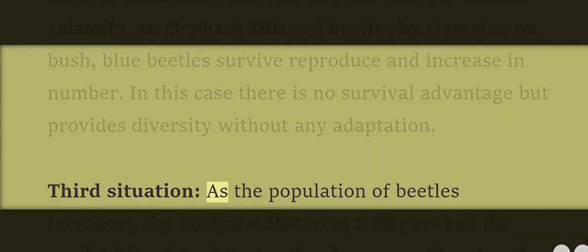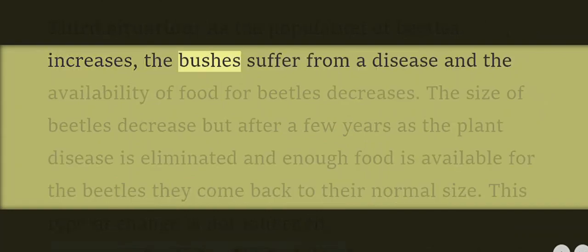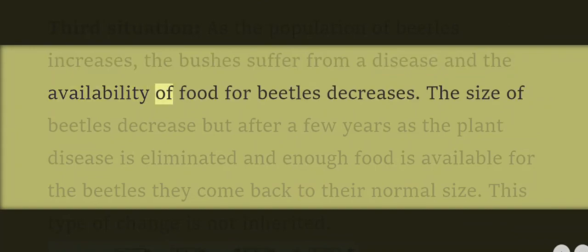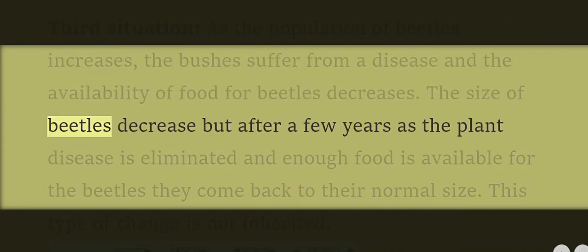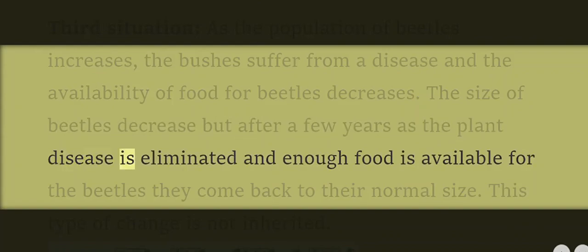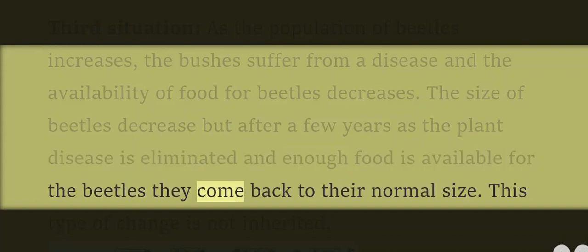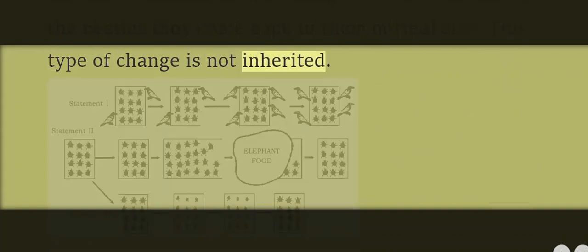Third situation: As the population of beetles increases, the bushes suffer from a disease and the availability of food decreases. The size of the beetles decreases, but after a few years, as the plant disease is eliminated and enough food is available, the beetles come back to their normal size. This type of change is not inherited.